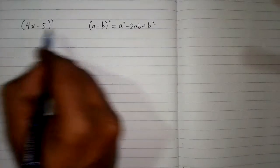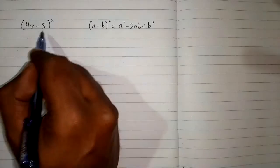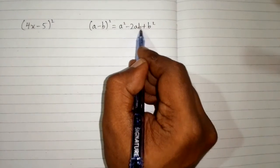So we can see that we have 4x in place of a and 5 in place of b. So we will put 4x in place of this a and this a, and 5 in place of this b and this b.